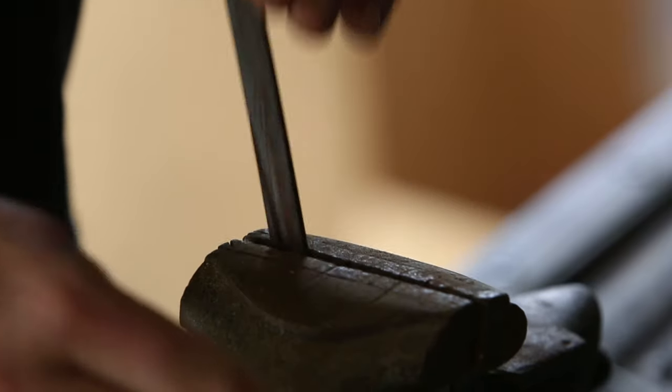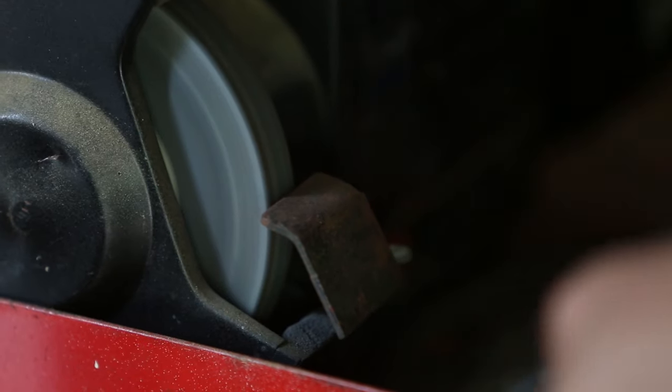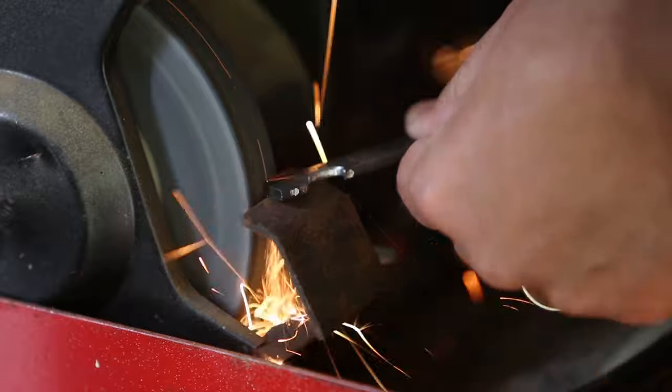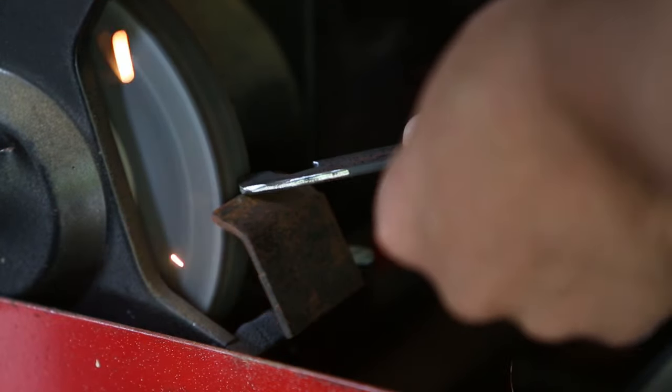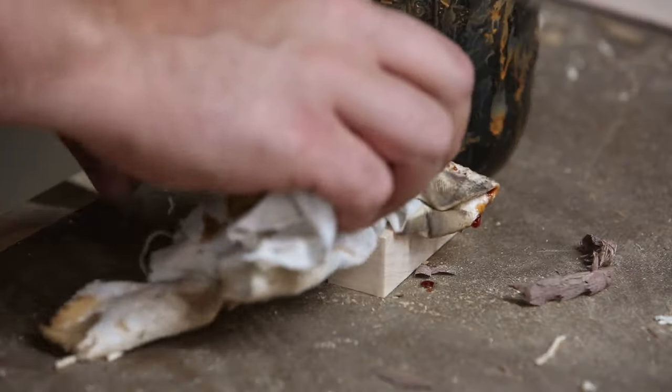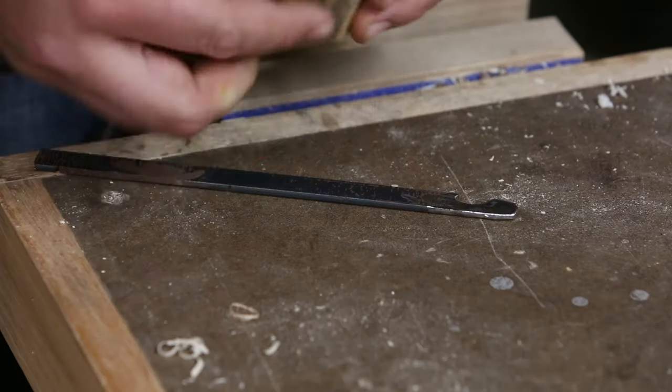I started by cutting some 1/8 inch mild steel, then dressing up the tooth with a chainsaw file and shaping it at the grinder. After my trip to Blanc Creatives, I wanted to try iron buffing some curly maple I had lying around to see how it looked before going any further.